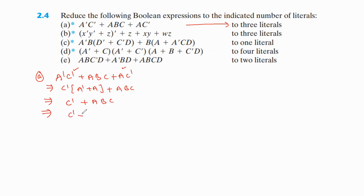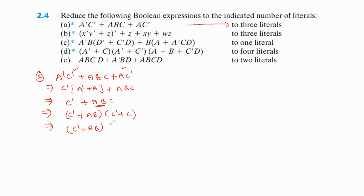Now simplify C' + ABC. We look at C' + C, which by the identity C' + C equals one. This implies C' + AB as it is — we cannot simplify further. Therefore the answer is C' + AB.